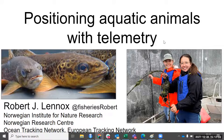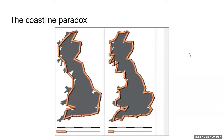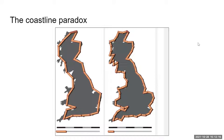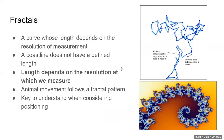I want to start with something called the coastline paradox. It essentially states that you can't actually measure a coastline — the measurement depends on the scale at which you measure. Depending on how fine-grained your intervals are, you'll get a different measurement. That's why, depending on how you measure it, Norway may have a longer coastline than Australia. Coastlines are fractals — a curve whose length depends on the resolution of measurement.